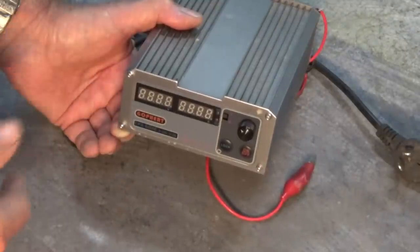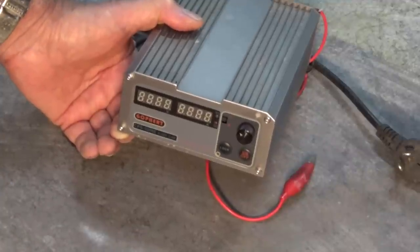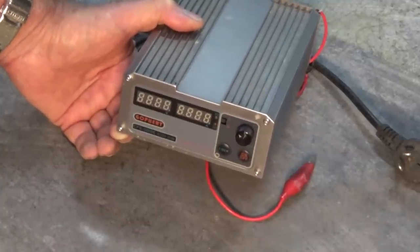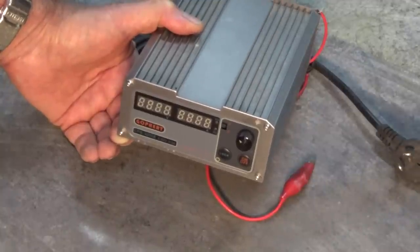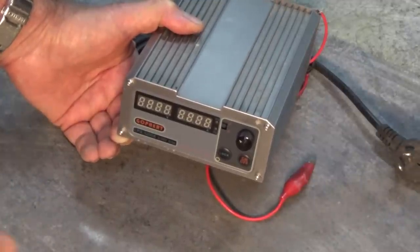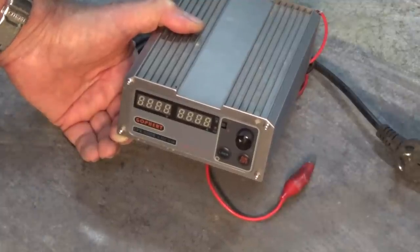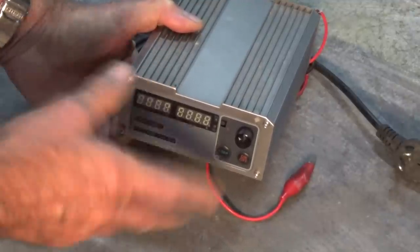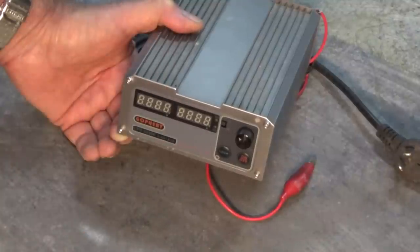Now if you do any research on anodising at home you'll see that a lot of people recommend using battery chargers or just a 12 volt DC battery. Although that works you don't get a lot of control. With a car battery you've got no control over the current or the voltage. This one allows you to select both and I generally operate it around about 15 volts.